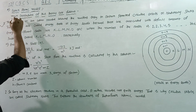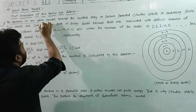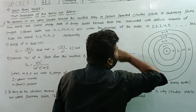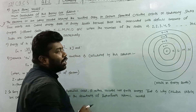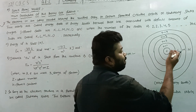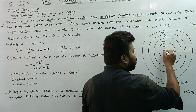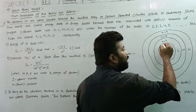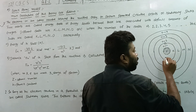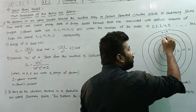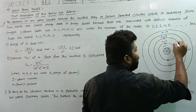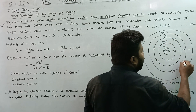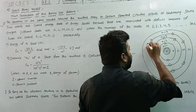The first postulate is that the electrons in an atom revolve around the nucleus only in certain permitted circular orbits, called stationary states. We are going to see the different shells, with the central positive charge being the nucleus.